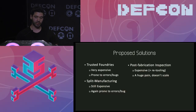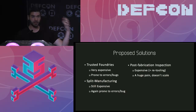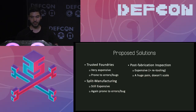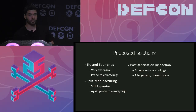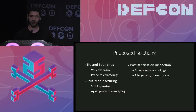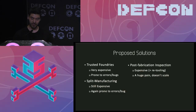The most popular approach is trusted foundries - you send your circuit design to a foundry you completely trust not to insert any trojans. The problem is it's very expensive, and mistakes can still happen during fabrication. Another approach is split manufacturing, which is more academic, still expensive, and errors may happen.